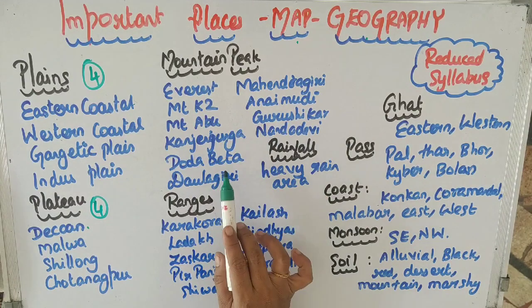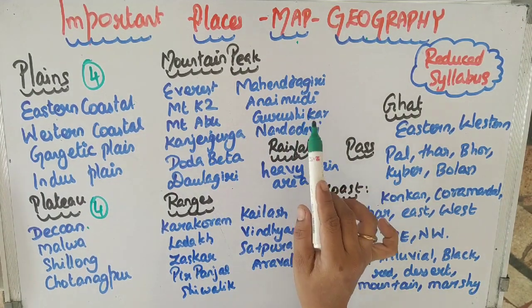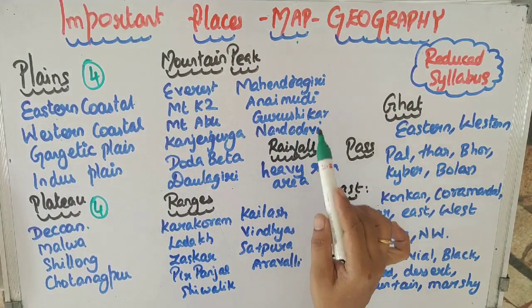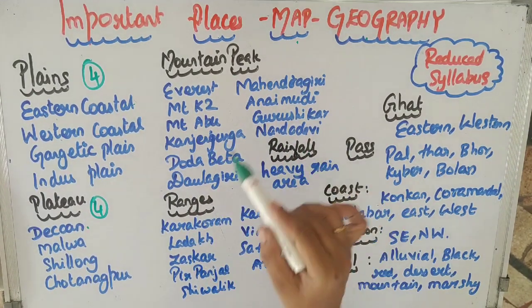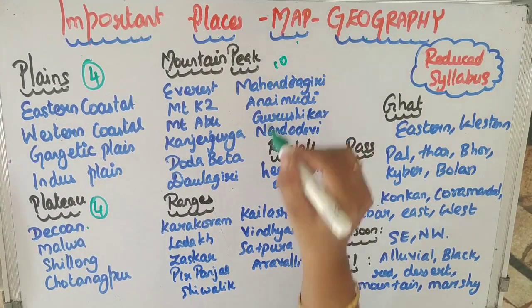Mountain peaks include Mount Everest, Mount Ketu, Abu, Kanjajanga, Dottabeta, Daulagiri, Mahenduragiri, Anamudi, Krushika, and Nandadevi. We have 10 mountain peaks.